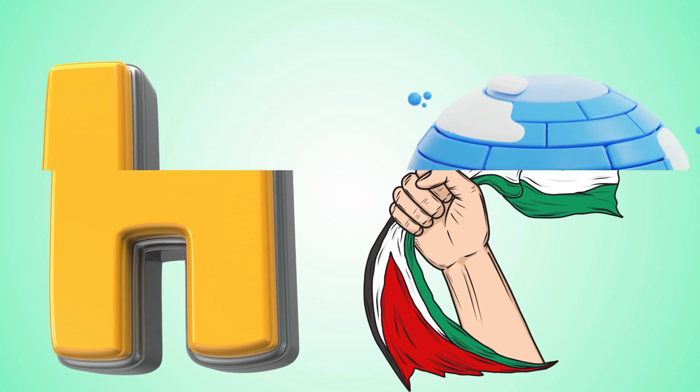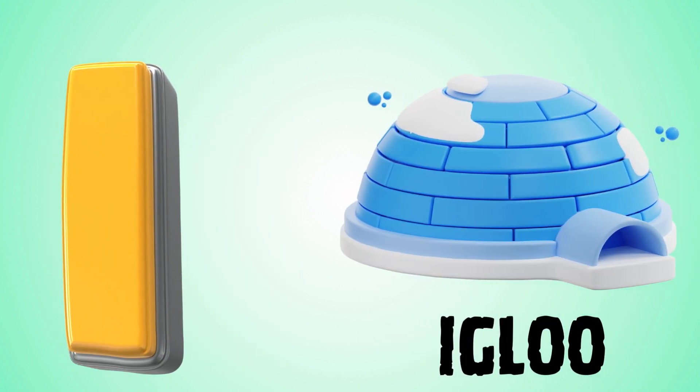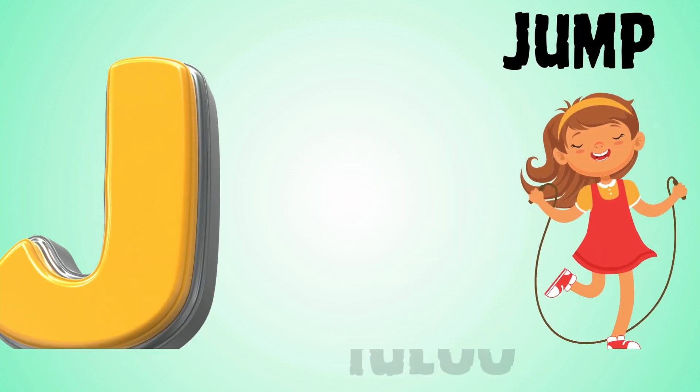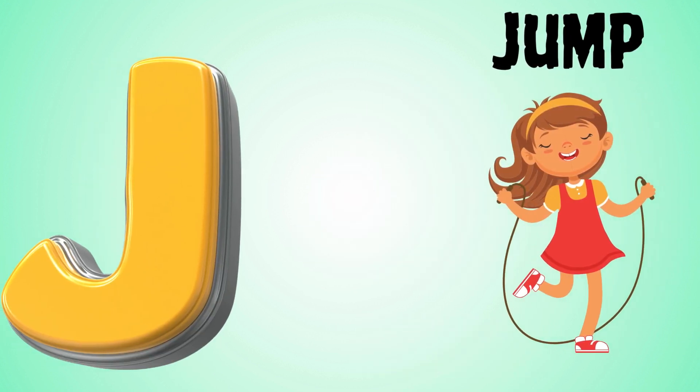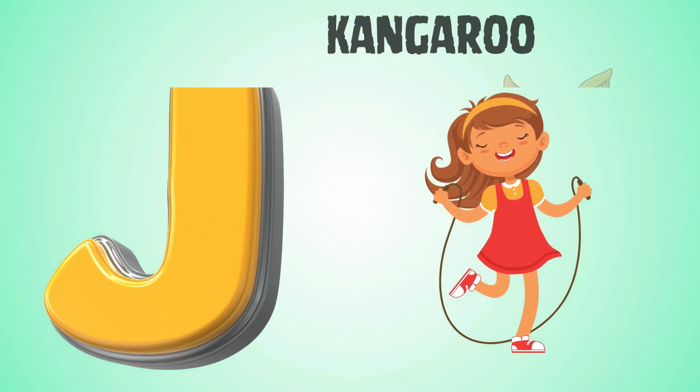I is for igloo, i-i-igloo. J is for jump, j-j-jump.